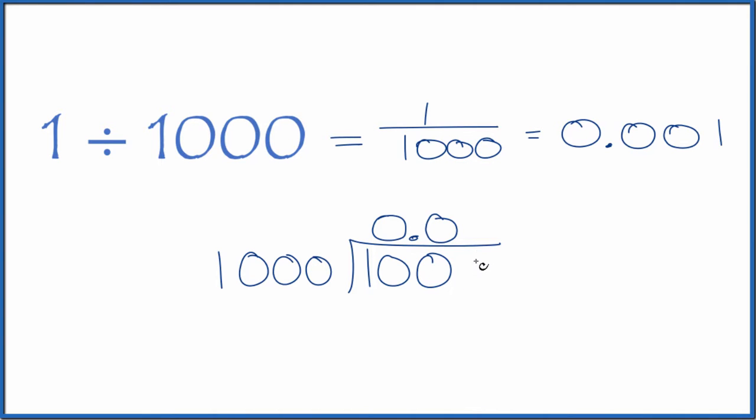Still, it doesn't go into 100. Let's call it 1,000, put our other 0 up here. But now, 1 times 1,000 is 1,000. We subtract, no remainder.